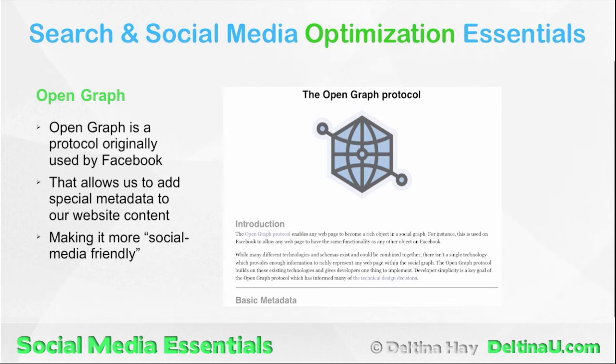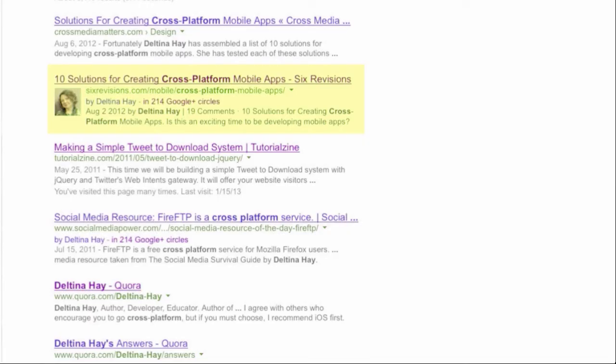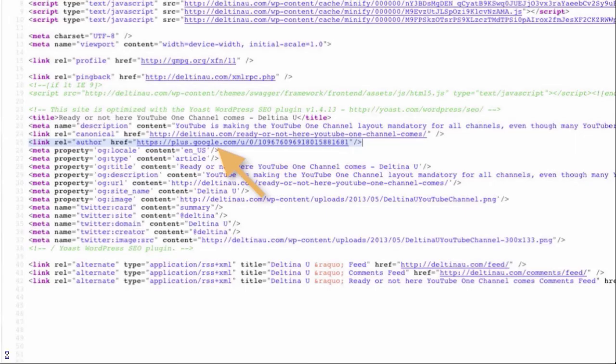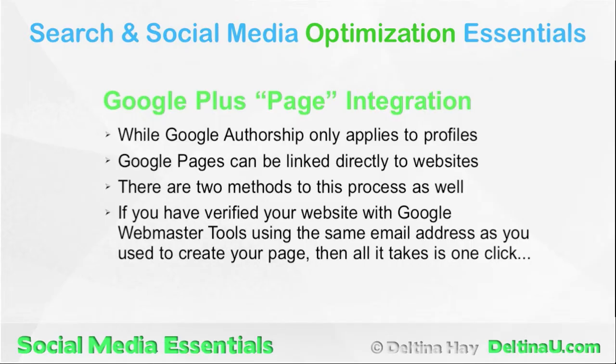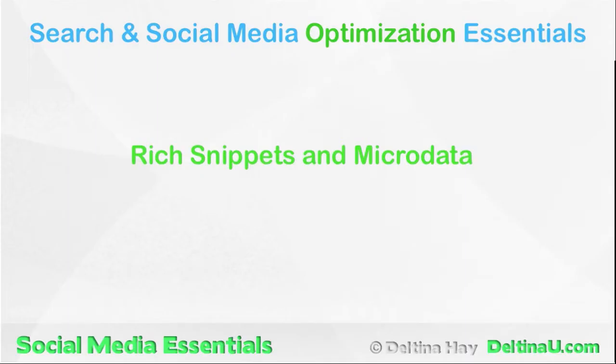Now we come to the third and final main section of the course: optimizing for conversion. Beginning with Google Authorship — Google Authorship makes our content look great in search results, and we walk through the process of acquiring authorship for your content and how to test it. We demonstrate this process on both HTML websites and WordPress powered websites, and also demonstrate how to verify your website with the Google Plus page so it too can look great in search results.